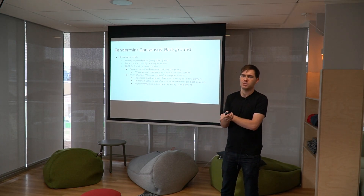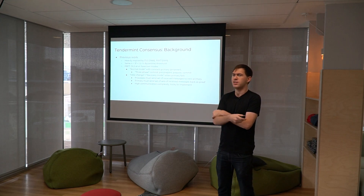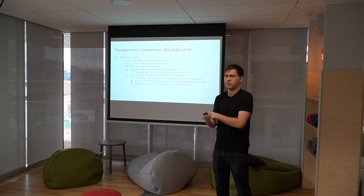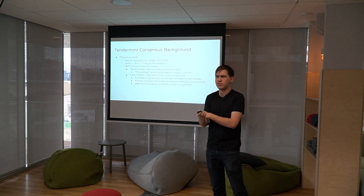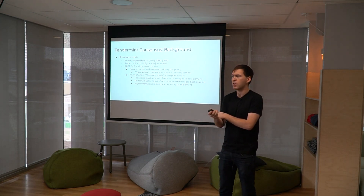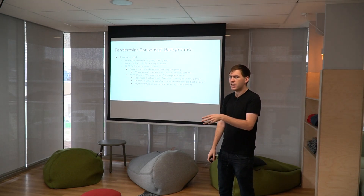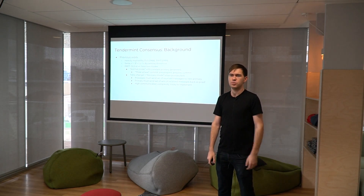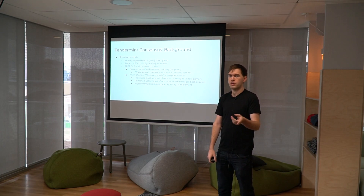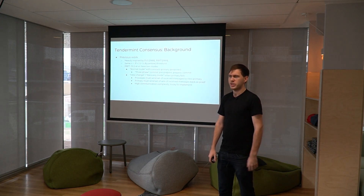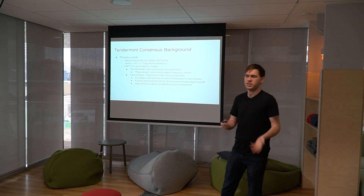That threshold is stake-weighted in the blockchain context, so differing nodes — differing bakers or validators, they all mean the same thing — could have different amounts of stake. We only need to require that less than a third of stake-weighted nodes are Byzantine, where Byzantine nodes can behave in any way.